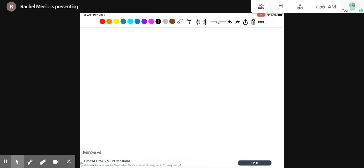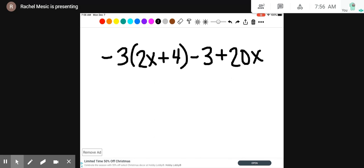Let's try negative 3 times 2x plus 4 minus 3. Let's see. Plus 20x. This one looks fun. All right. So the first thing we're going to do is distribute. So we'll do negative 3 times each of these.